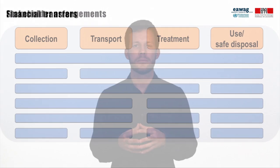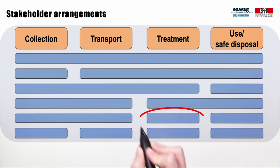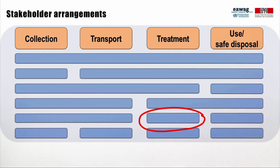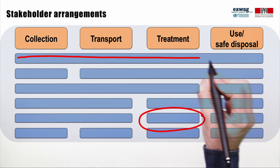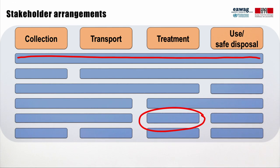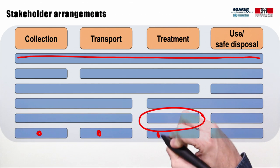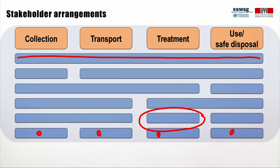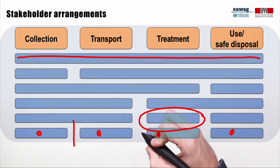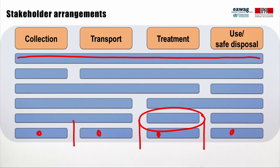The number of financial transfers in fecal sludge management strongly depends on the stakeholder arrangement. Different stakeholder arrangements are possible — in the simplest case, one stakeholder manages the entire fecal sludge management service chain and there are no financial transfers between stakeholders. In contrast, other arrangements with four stakeholders managing the service chain include more stakeholders and potentially more financial transfers between them.